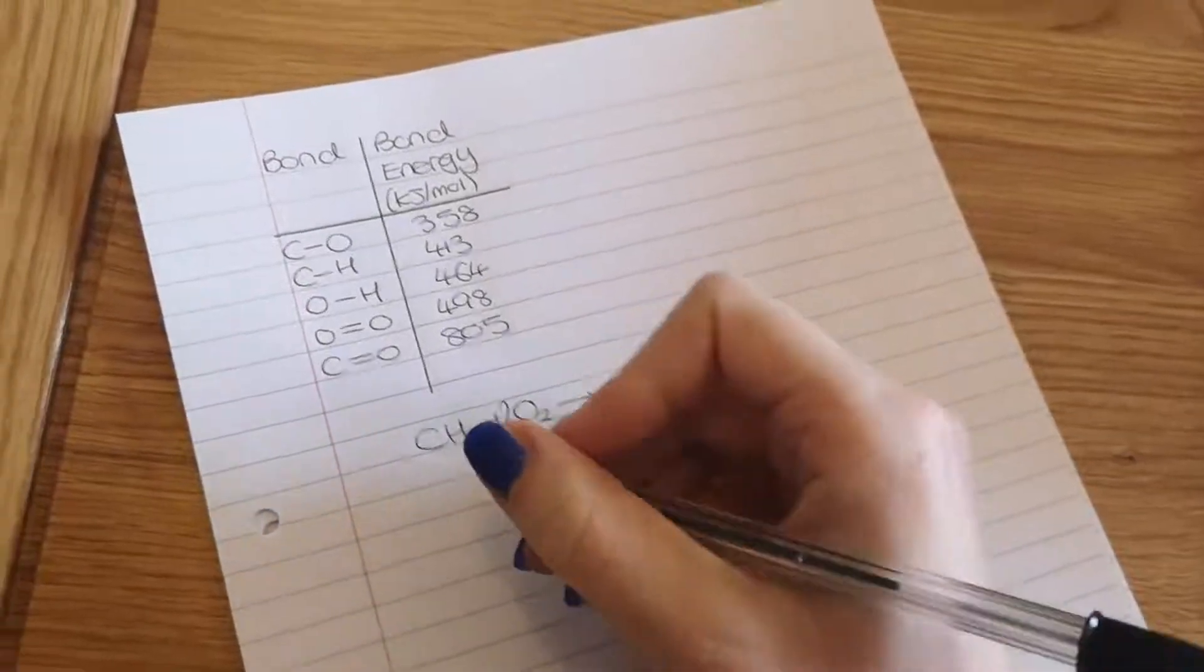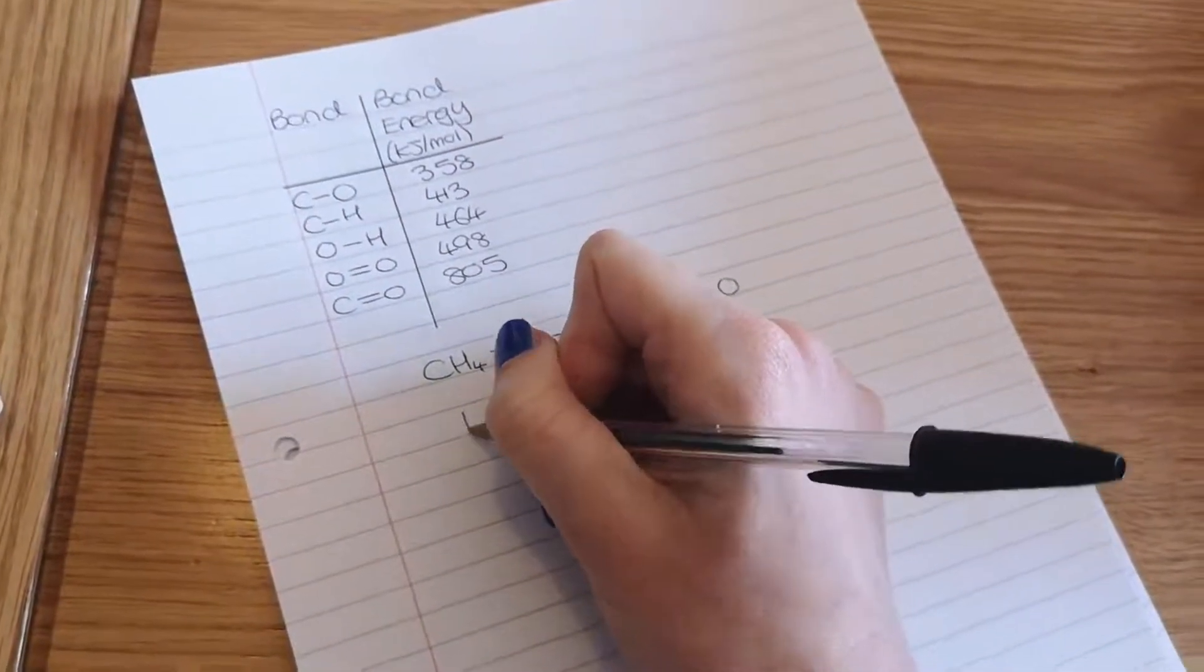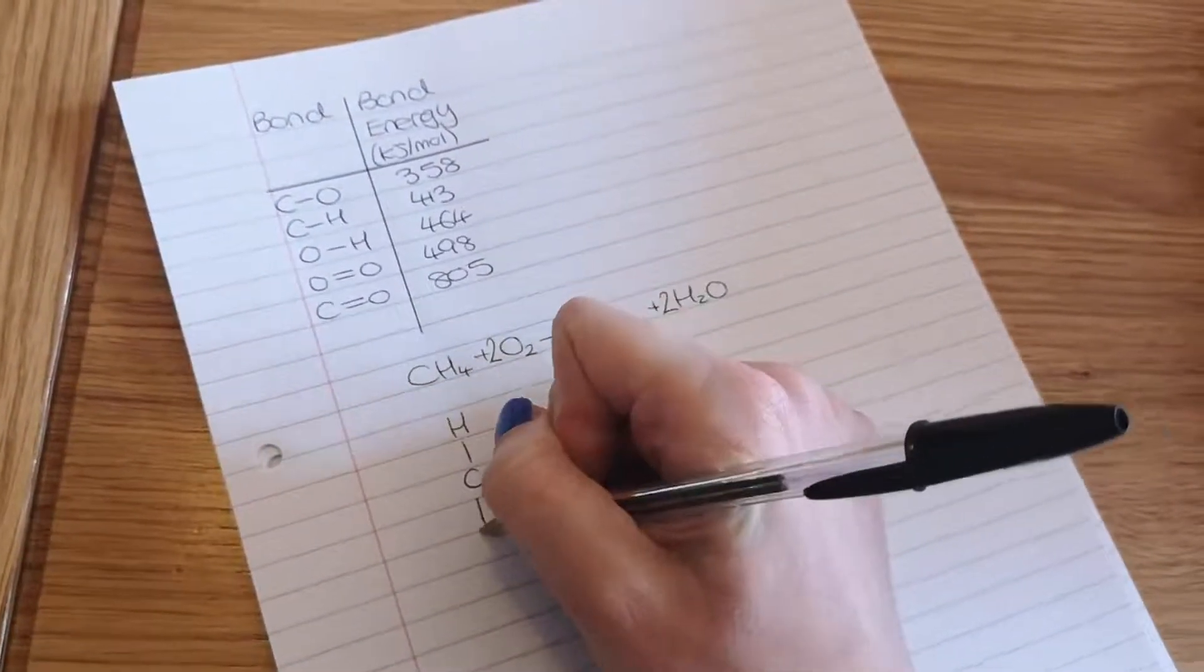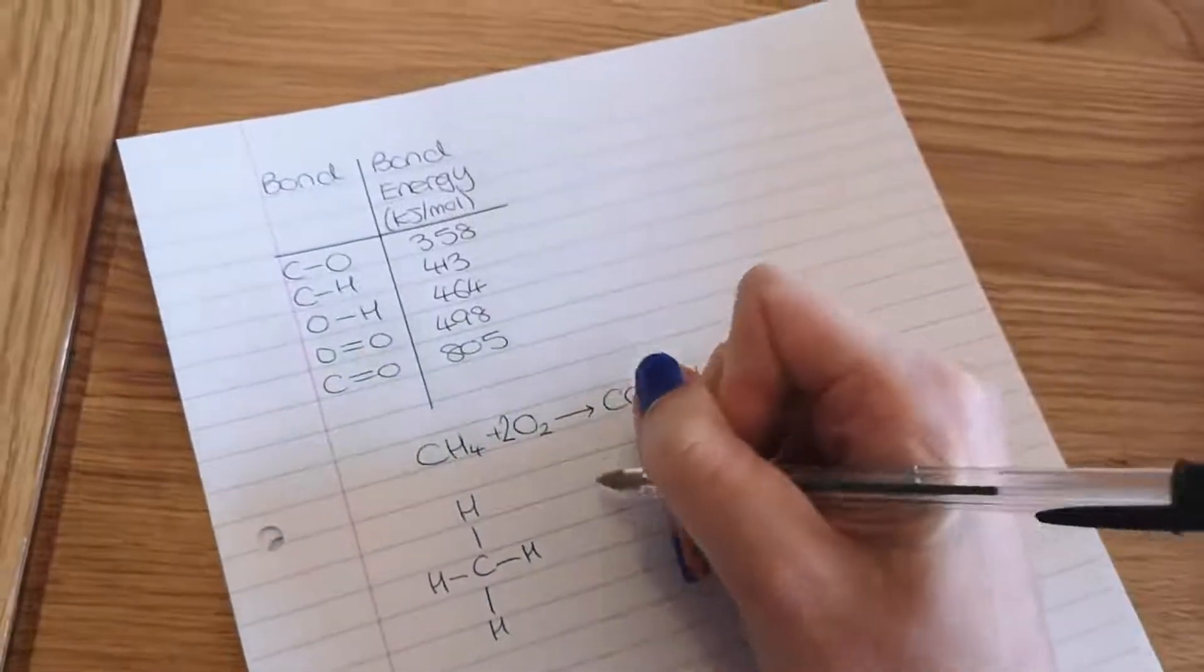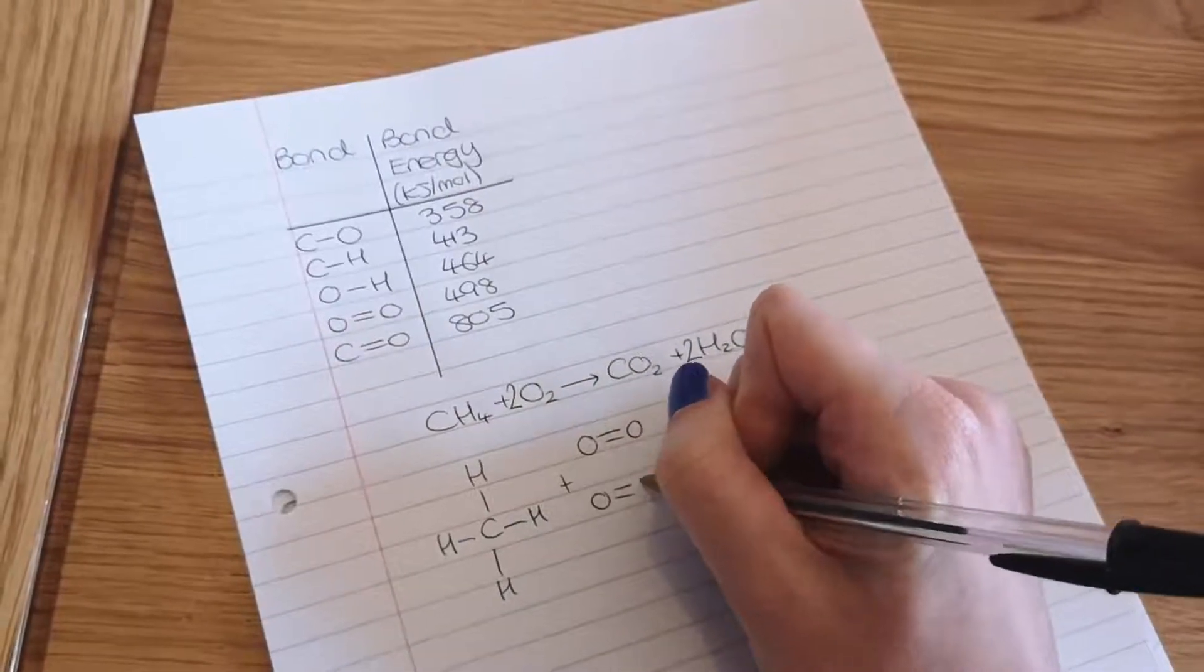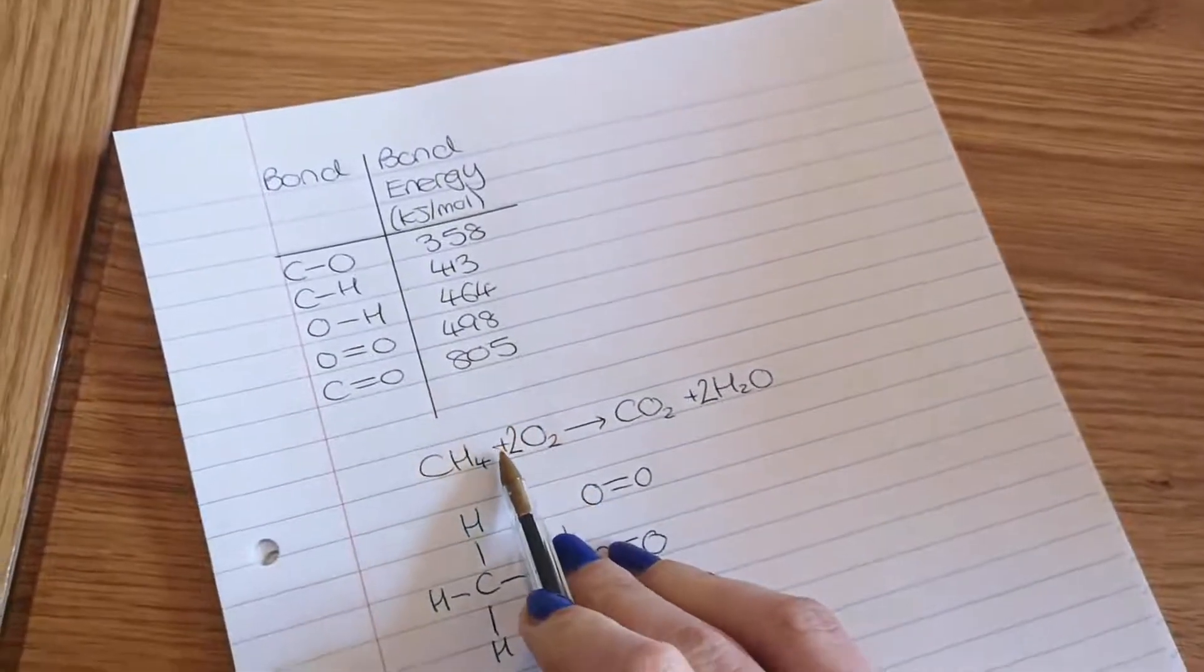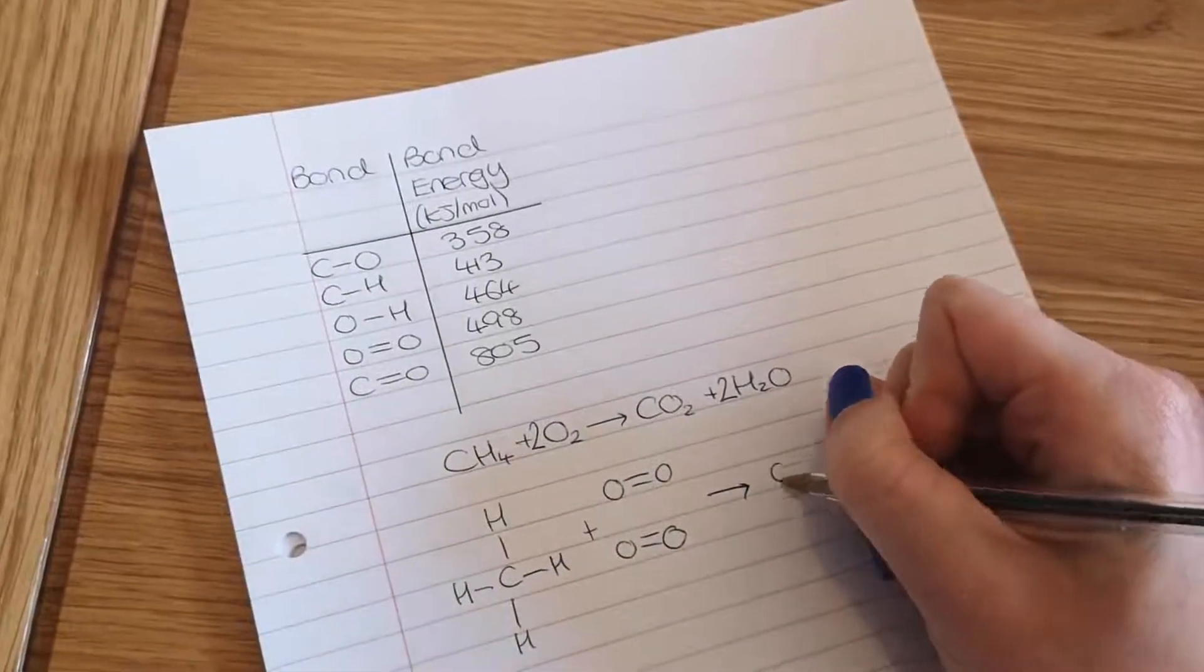The first thing you want to do is write out your structure so that you can see what you've actually got, which bonds are present. So my CH4 will look like that, each oxygen is like this, but I've got two because my balancing number here is a two, so I've got two oxygen molecules.